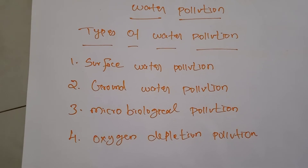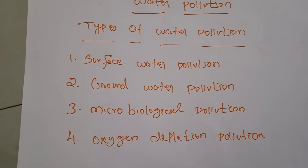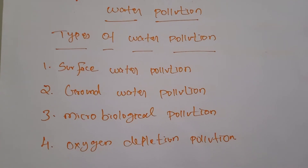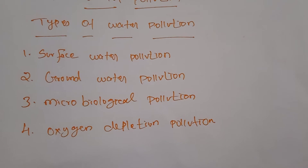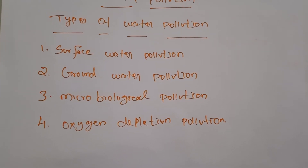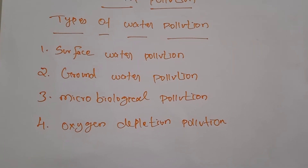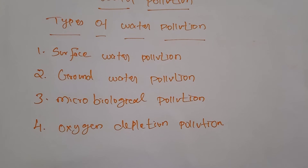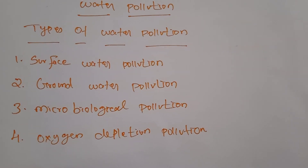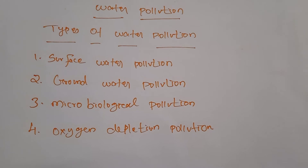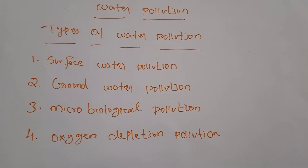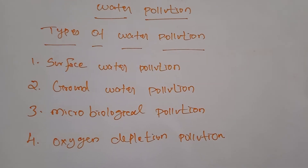Groundwater contamination occurs when man-made products such as gasoline, oil, and chemicals get into the groundwater. If this water is polluted, it is called groundwater pollution. Next, microbiological pollution — in many communities around the world, people drink untreated water. Sometimes there is natural pollution caused by microorganisms like viruses and bacteria, which causes both aquatic and human illness.